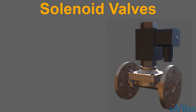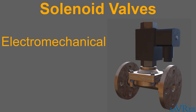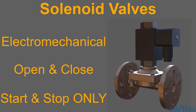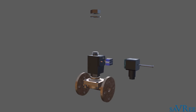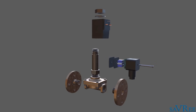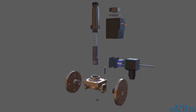Solenoid valves are electromechanically operated valves. They are very well suited to opening and closing operations and can be used to start or stop flow, but are not well suited for regulating flow. This type of valve is fast acting. An electromagnet is used to operate the valve when current is supplied to the windings. A spring is used to return the valve to its fail-safe position when the electrical current is no longer present.